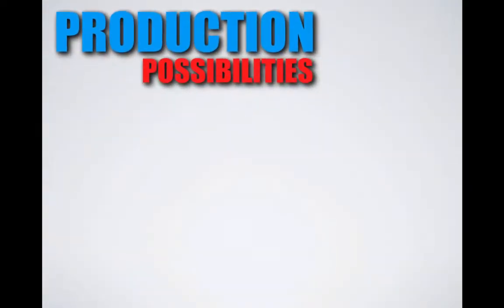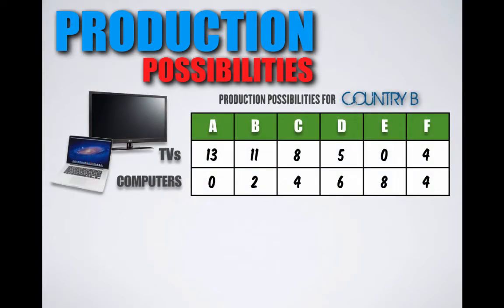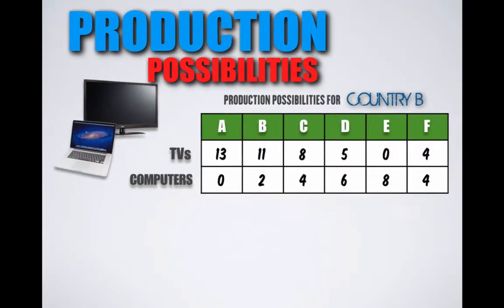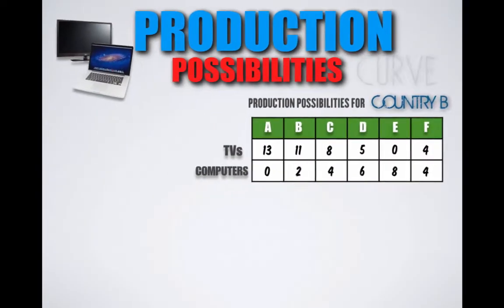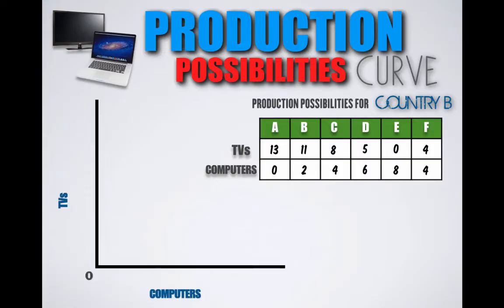Here we have a production possibility schedule for Country B. Given their current available resources, Country B can produce TVs and computers in various combinations. We can also visualize opportunity cost and production possibilities by creating a production possibilities curve for Country B. We begin by drawing two axes, one for each good that Country B can produce. The vertical axis will be for TVs, the horizontal axis will be for computers.